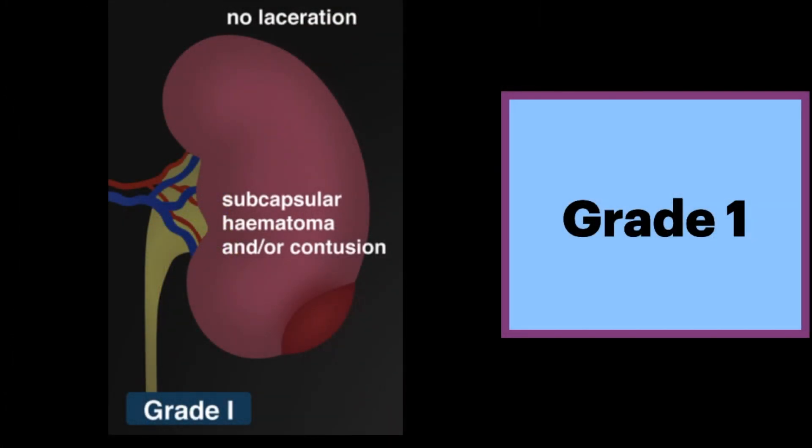Starting with the mildest form, grade 1, that is a contusion. This is a poorly defined region of decreased parenchymal enhancement. On non-contrast CT, contusions may be iso- to hyperattenuating relative to adjacent normal renal parenchyma. There may be a small subcapsular hematoma, which is crescent-shaped and follows the renal contour when small. No associated laceration is present.